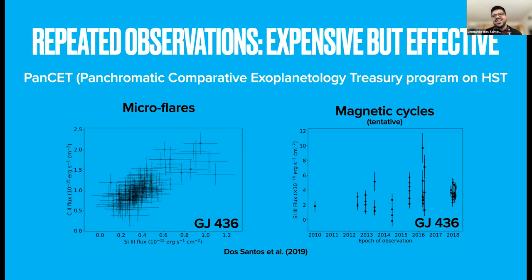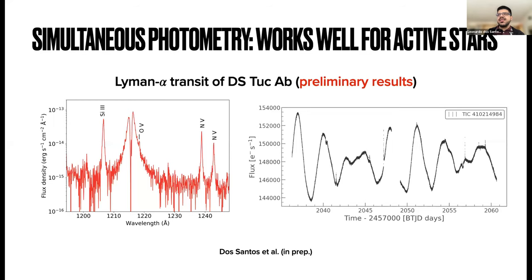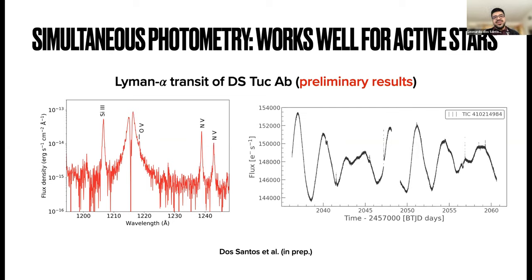The problem is that it takes many HST visits and they're not easy to come by. So if you want a cheaper, more pragmatic approach, I propose simultaneous observations. One example is a program we had last year to do a Lyman-alpha transit of V1298 Tau AB — a young, 45-million-year-old Neptune-sized planet. Our strategy was to schedule our HST visit to coincide with simultaneous TESS observations.